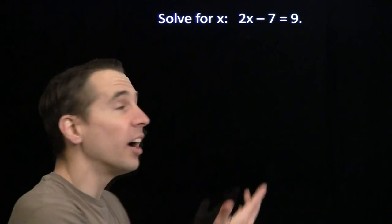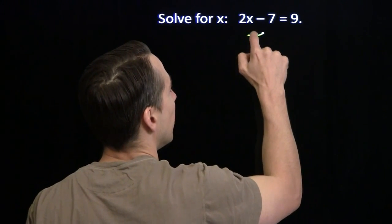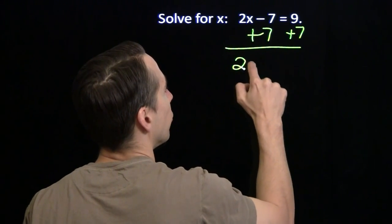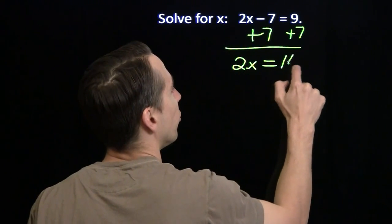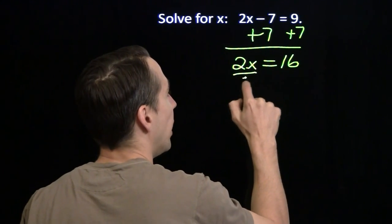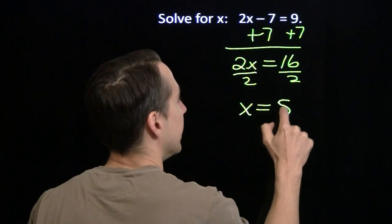We know how to handle this. We isolate the variable. We start off by getting the 2x all by itself by adding 7 to both sides, and that gives us 2x equals 16. Then we get the x by itself by dividing both sides by 2, and that leaves us x equals 8.